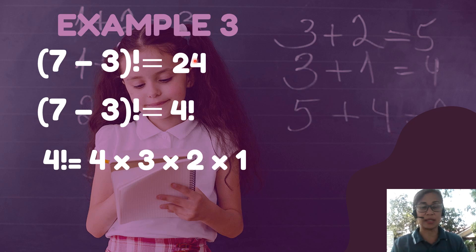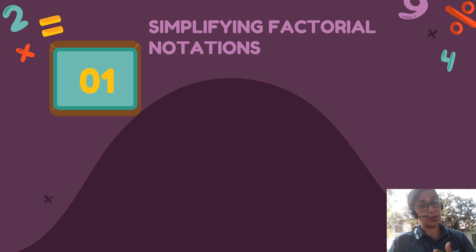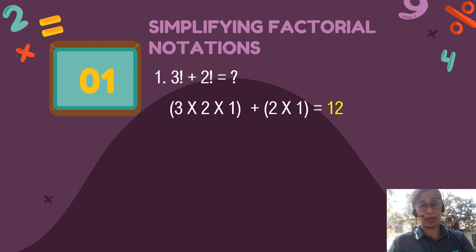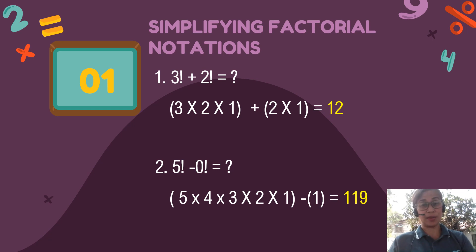Now let's move on to simple practice exercises. It is your turn to try what you have learned today by simplifying the following factorial notations. First: 3 factorial plus 2 factorial will be equal to what? The answer is 8. Next is number 2: 5 factorial minus 0 factorial. The answer is 119. Remember, 0 factorial has a value of 1, so it will be 120 minus 1, which is 119.